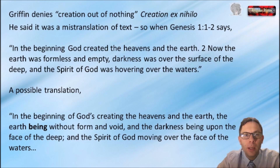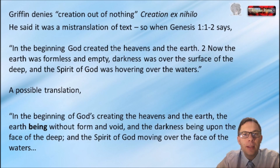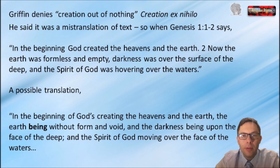Process theology comes from Griffin, who takes the work of Whitehead and builds on it. He starts by saying he doesn't accept creation ex nihilo — creation out of nothing. He says that when God created the world in Genesis 1, it was a mistranslation of the text. The standard text reads: 'In the beginning, God created the heavens and the earth. Now the earth was formless and empty, darkness was over the surface of the deep, and the Spirit of God was hovering over the waters.' Griffin suggests this is a mistranslation, partly due to punctuation and partly due to word choices.